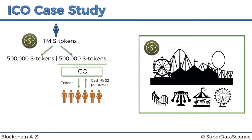So what will these people do with their tokens? There are two things they can do. They can wait until the theme park is live and then spend their tokens on rides. It's a form of crowdfunding — instead of waiting until the park is built, they buy the tokens now to help Mary get started and then spend them later. For them, it's just a timing difference.